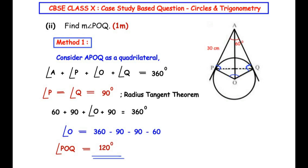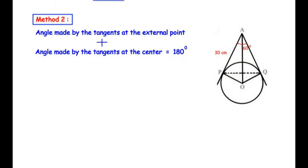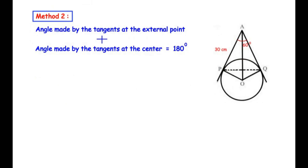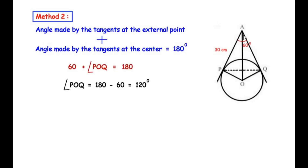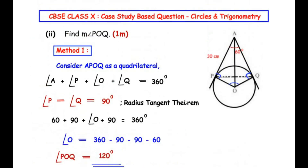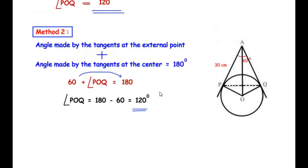Method two uses a property of the two tangent theorem: the angle made by the tangents at the external point, added to the angle made by the same tangents at the center, equals 180 degrees. The angle at external point A is 60 degrees, so 60 plus angle POQ equals 180 degrees, giving angle POQ equals 120 degrees. Since this question is just for one mark, I suggest using method two as it is much easier.